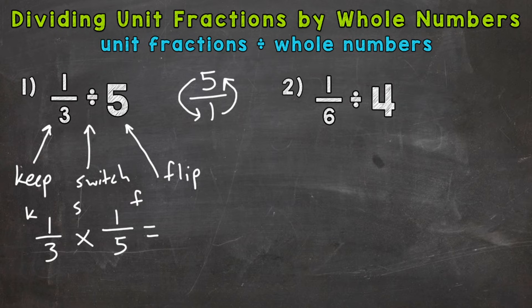Now, we can multiply straight across. 1 times 1 is 1. 3 times 5 is 15. And that's the answer to our original problem, 1 third divided by 5. So each one of those five groups has a value of 1 15th after we split 1 third into those five equal groups.